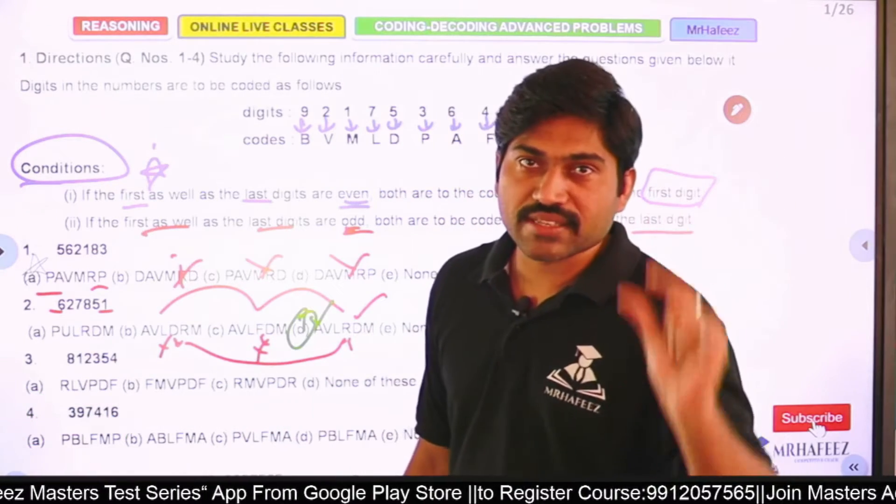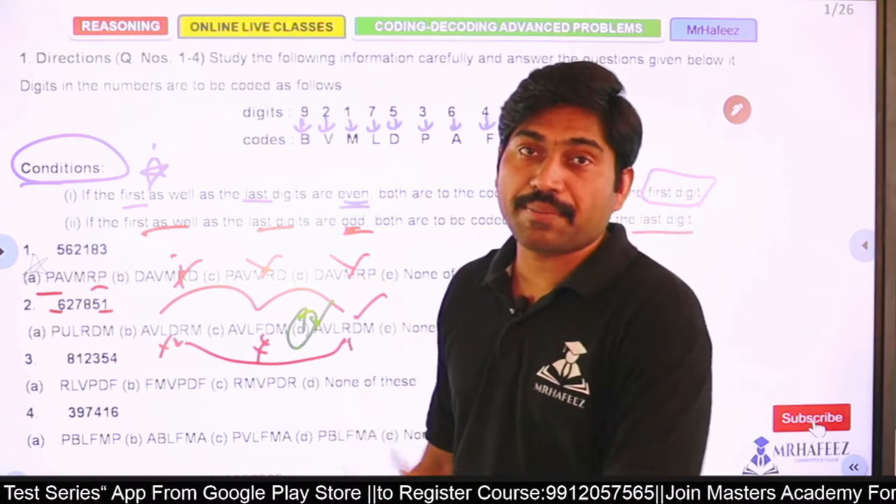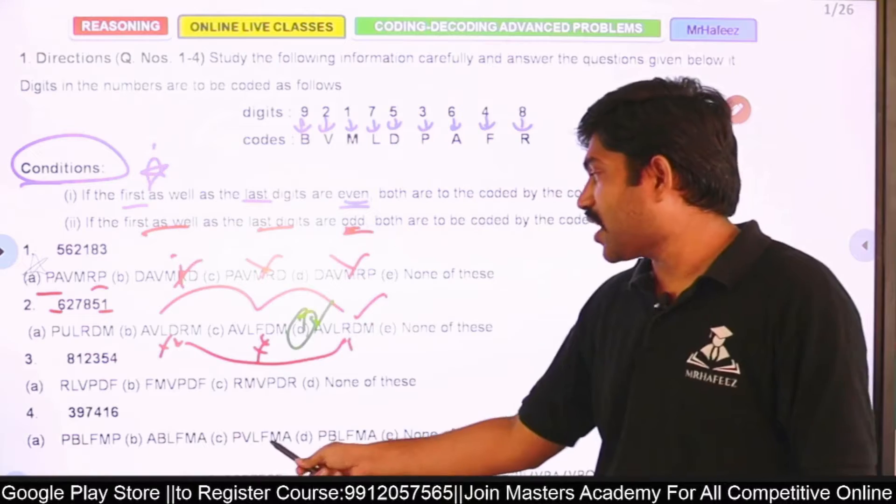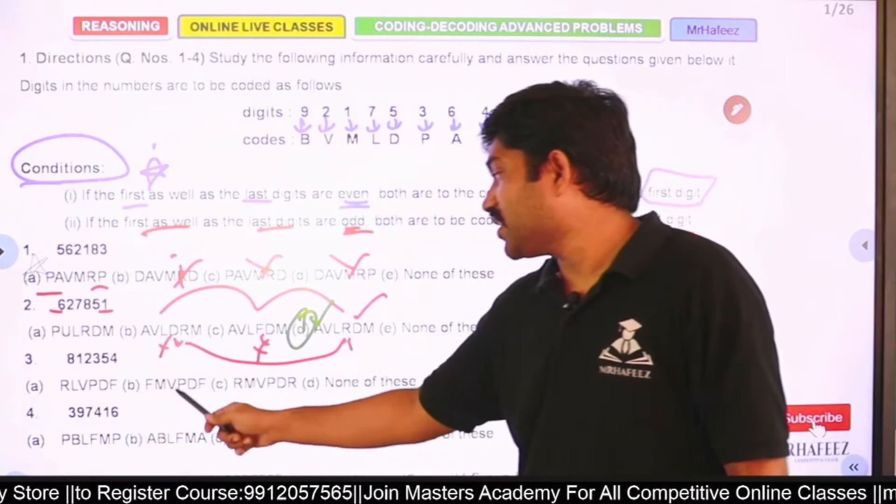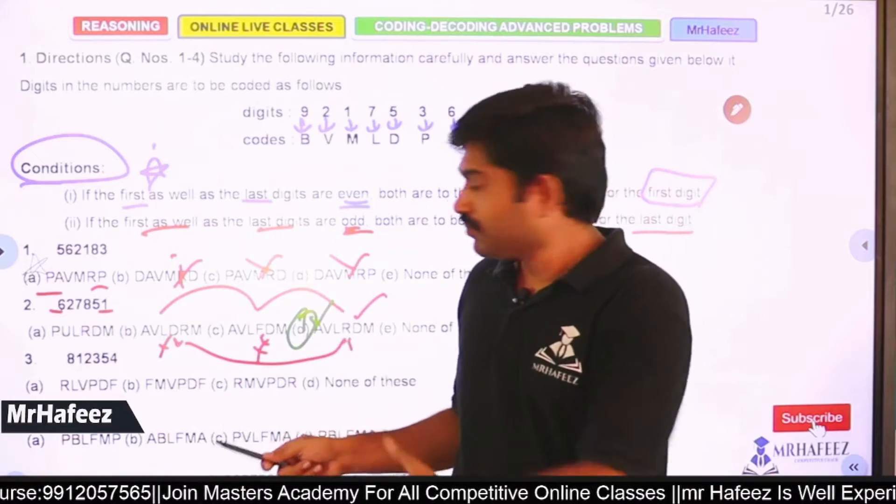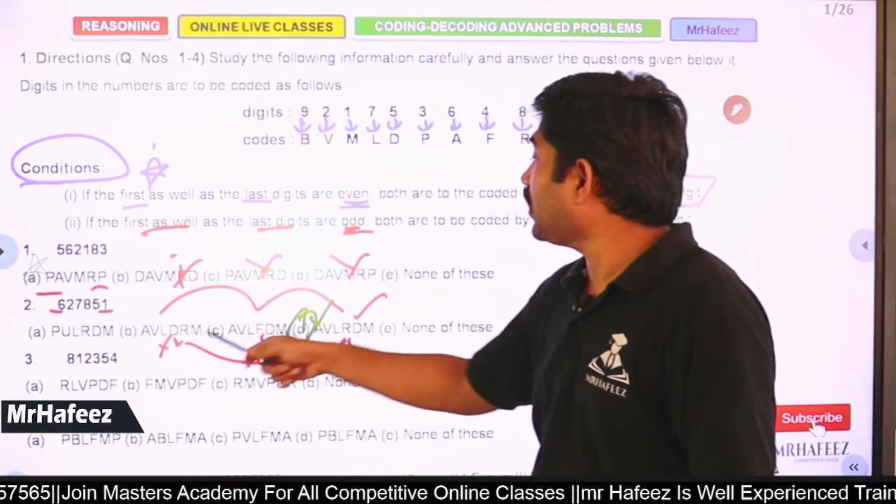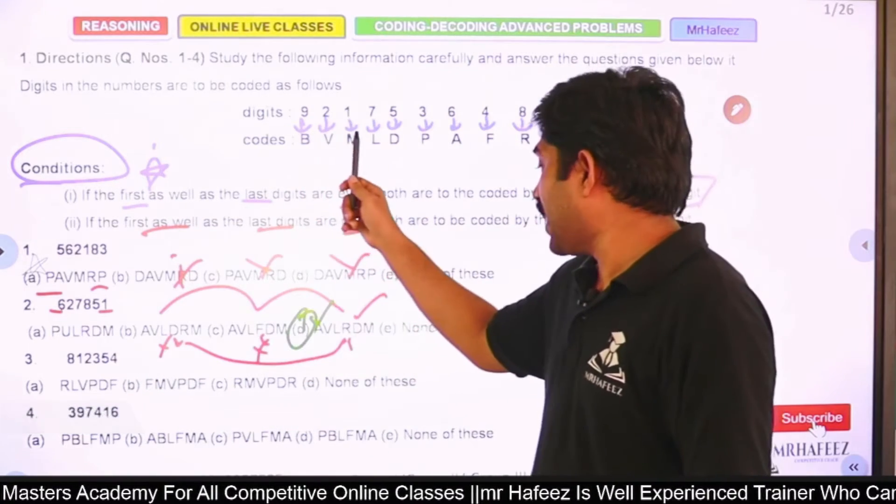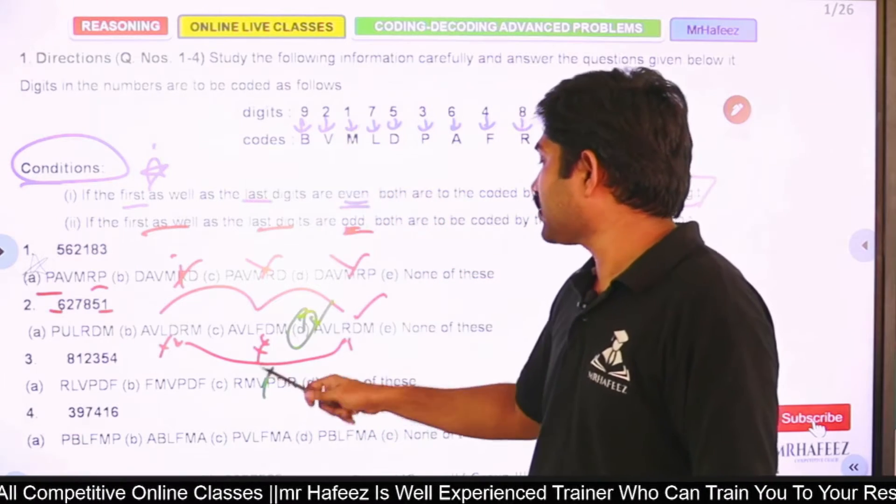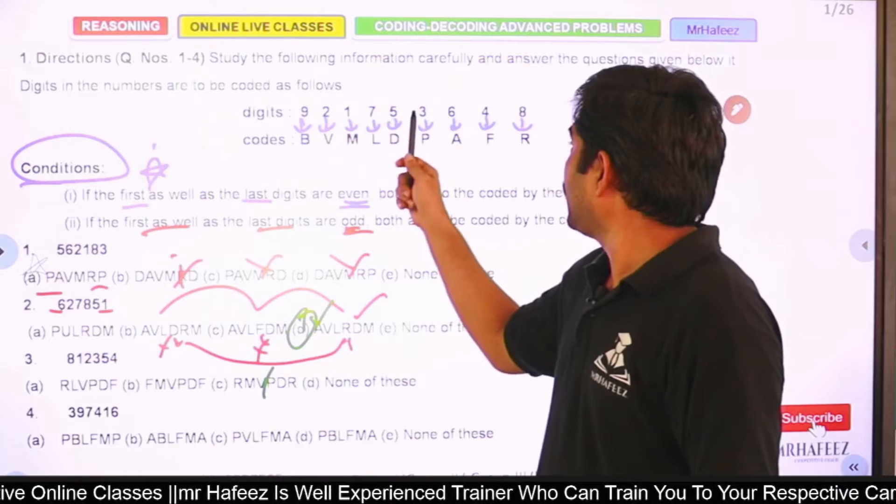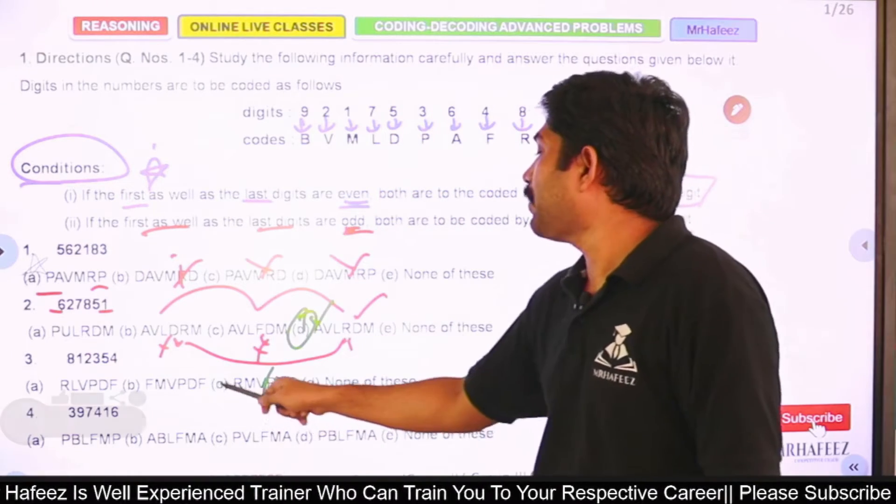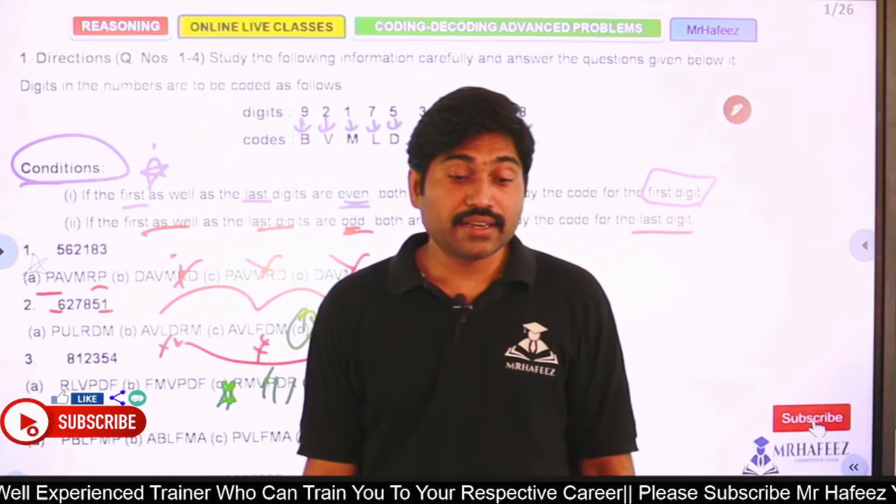8 and 4 are even numbers. When both are even numbers, what should we do? First code should be 8's code, which is R. So R first, R last. First two options are not my answer. Third can be my answer. Let me check: 1 is M - yes, 2 is V - yes, 3 is P - yes, 5 is D - yes. My answer is right. It's answer C.